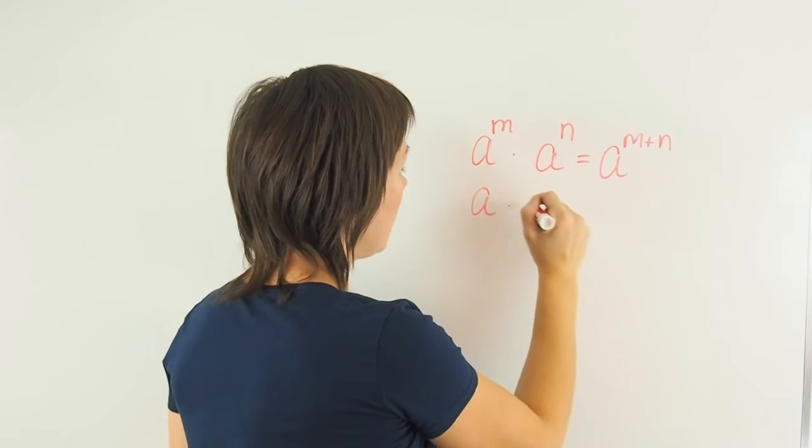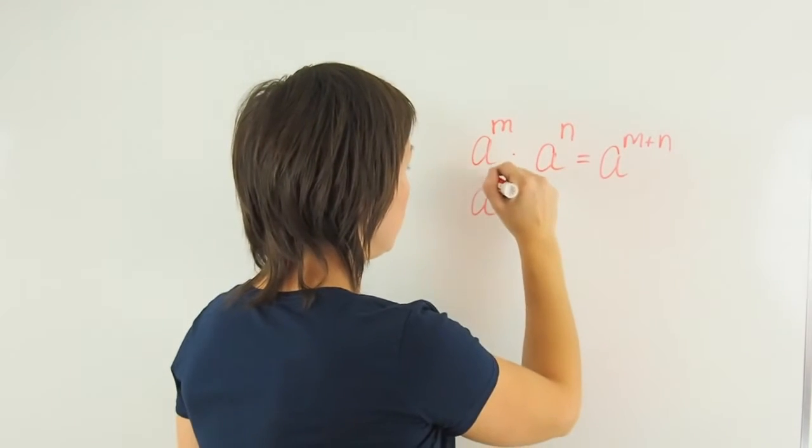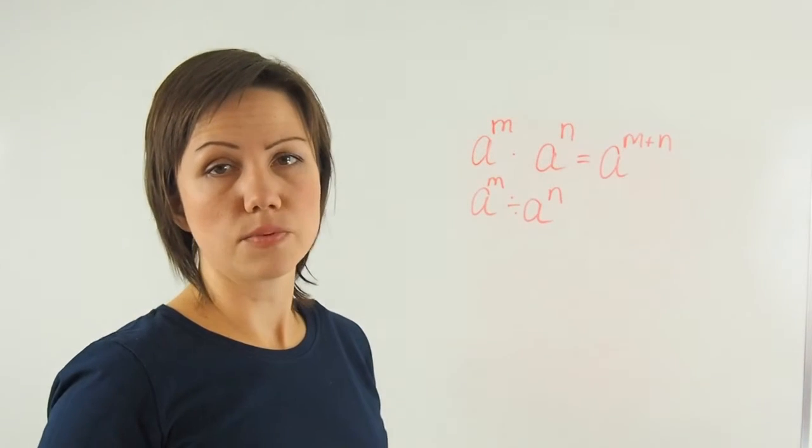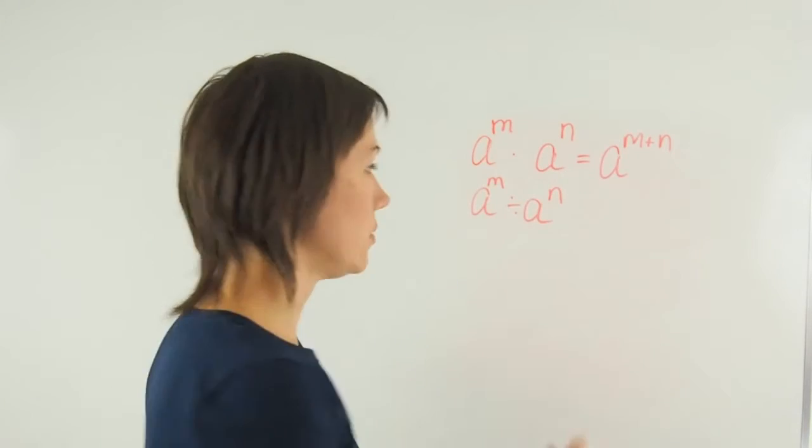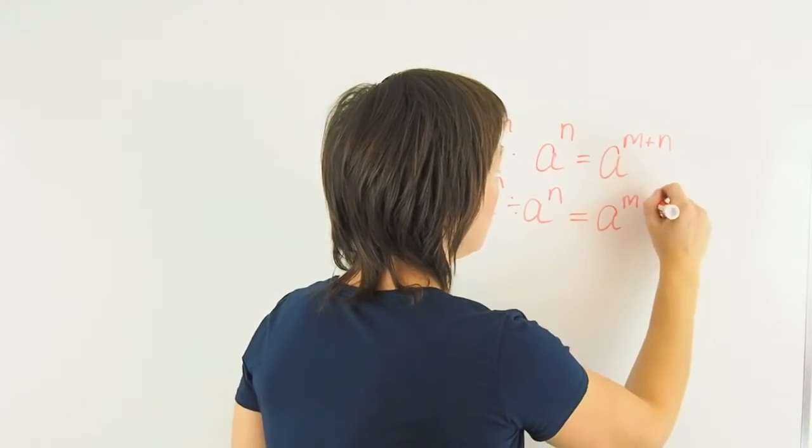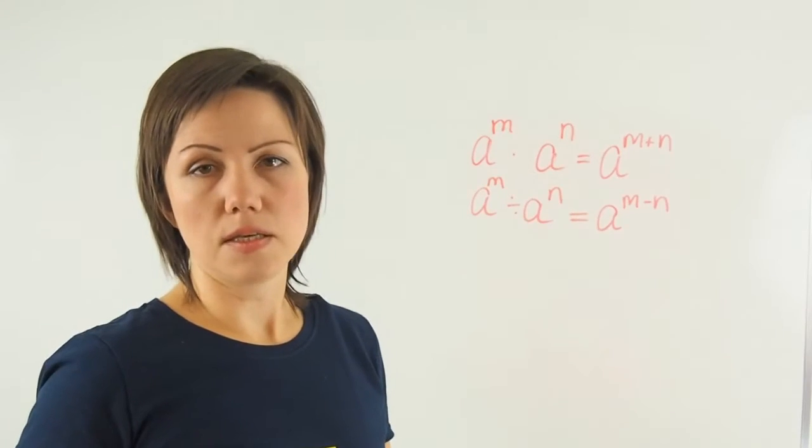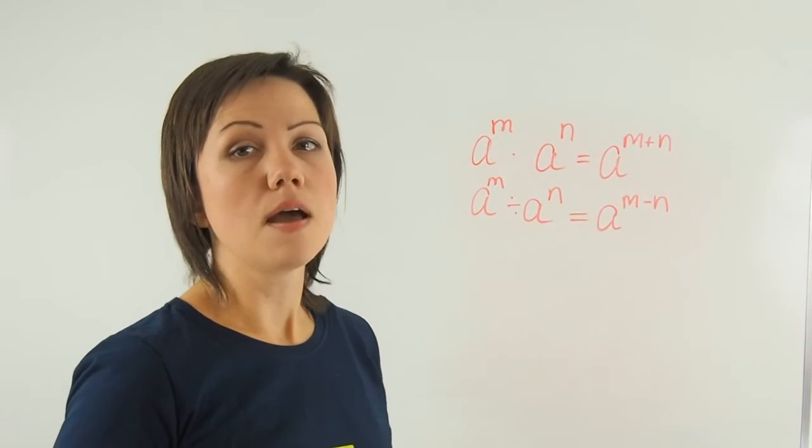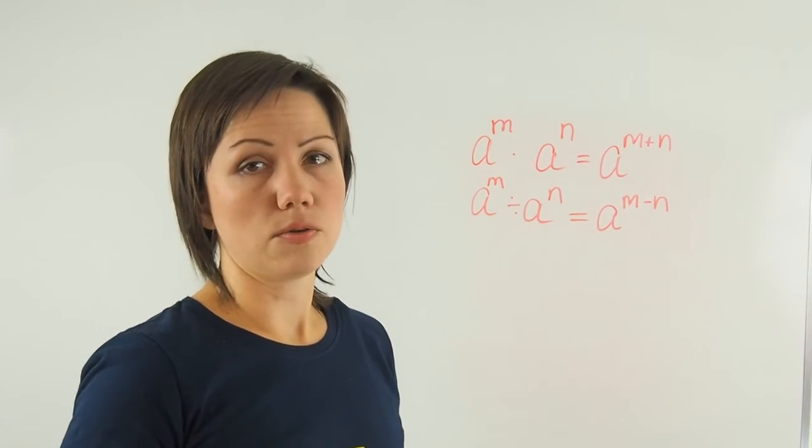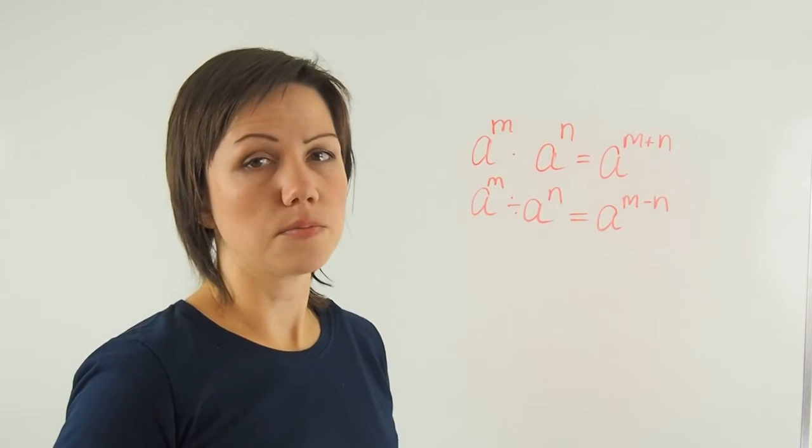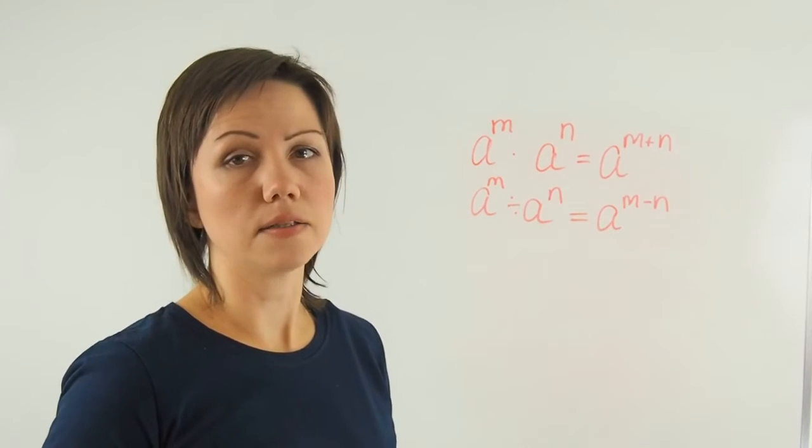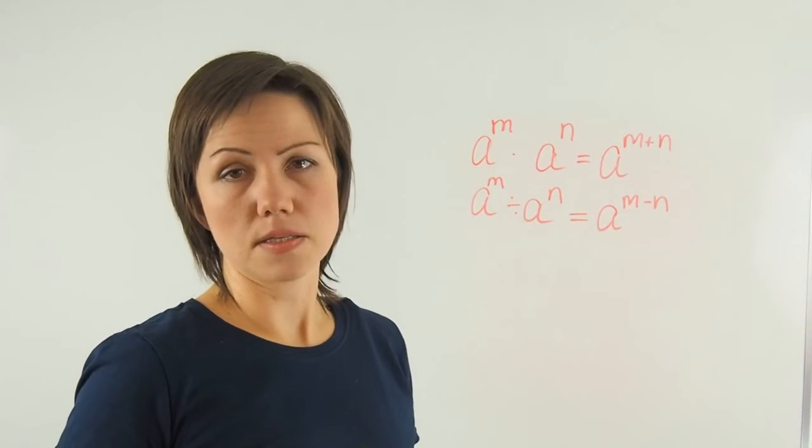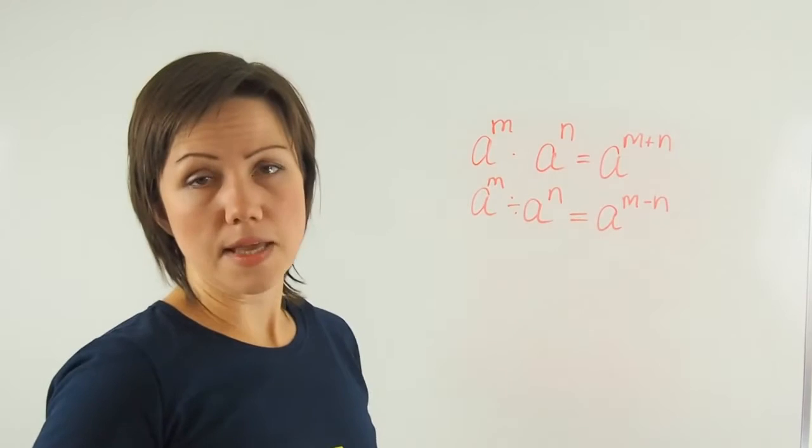If I have the same base with two different exponents and I want to divide those two bases with the same or different exponents, I will subtract the exponents and keep the base. Note that you're not multiplying the base by itself because it's just that number that you are multiplying by itself a number of times. So you're only changing the number of times you're multiplying it by itself, but the base has to stay the same.